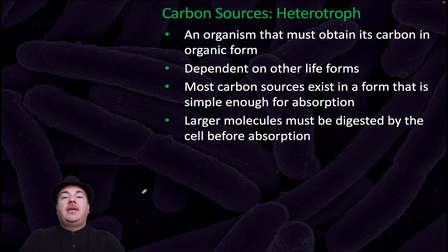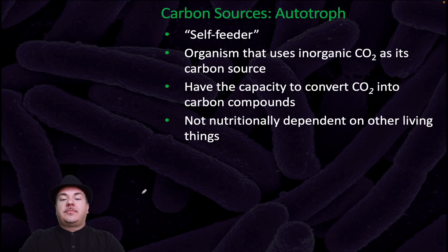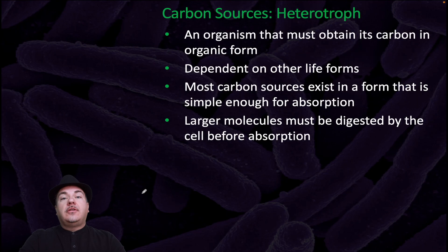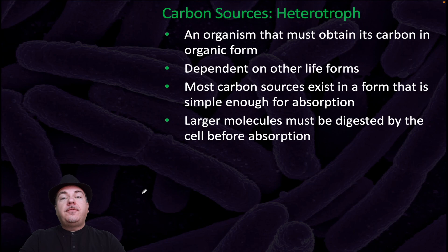One type of organism is called a heterotroph — an organism that must obtain its carbon in organic form. Because of this, it's dependent upon other life forms. Most carbon sources exist in a form simple enough for absorption, but larger molecules must be digested by the cell before absorption. Alternatively, we can have an autotroph, called a self-feeder, which uses inorganic carbon dioxide as its carbon source, having the capacity to convert CO₂ into carbon compounds, and therefore is not nutritionally dependent upon other living things. Humans would be a heterotroph, whereas plants would be an autotroph.